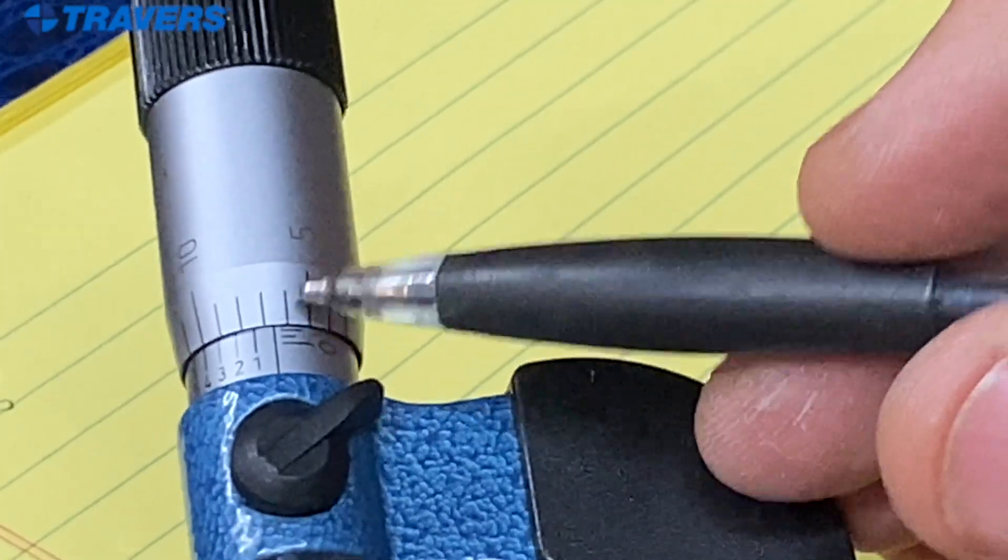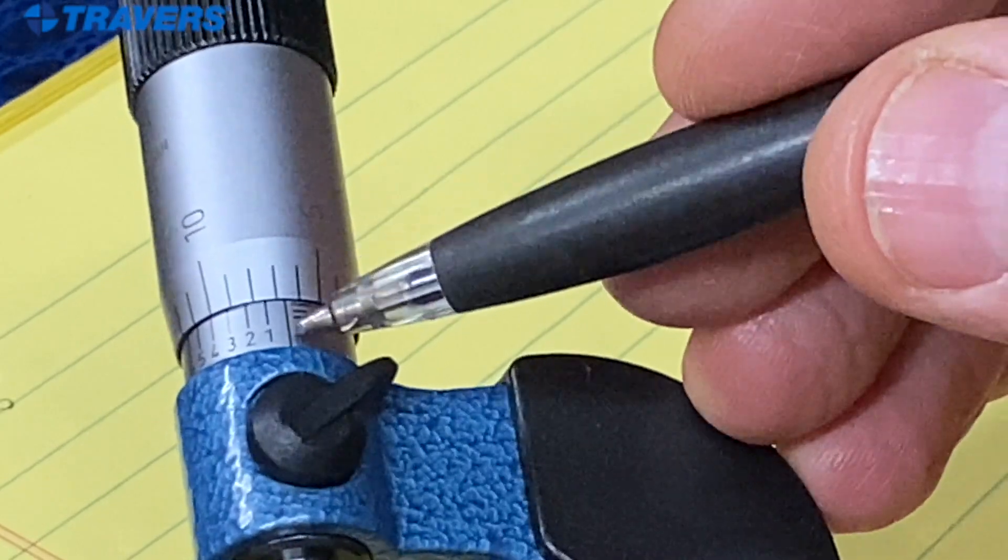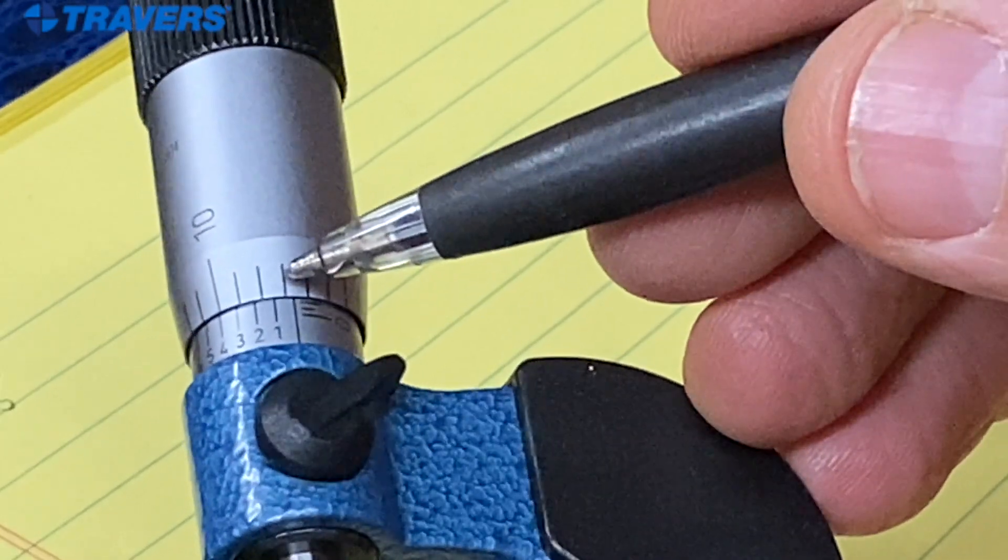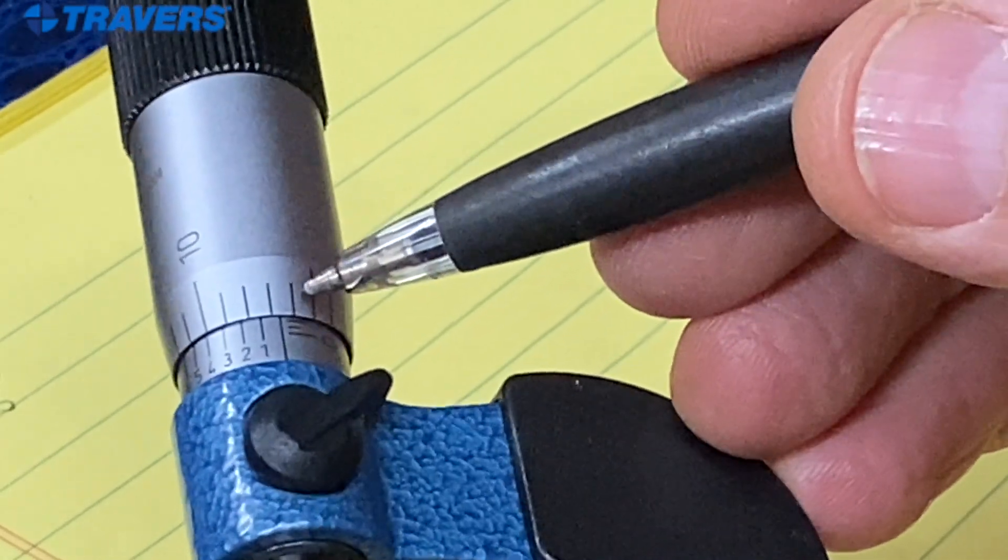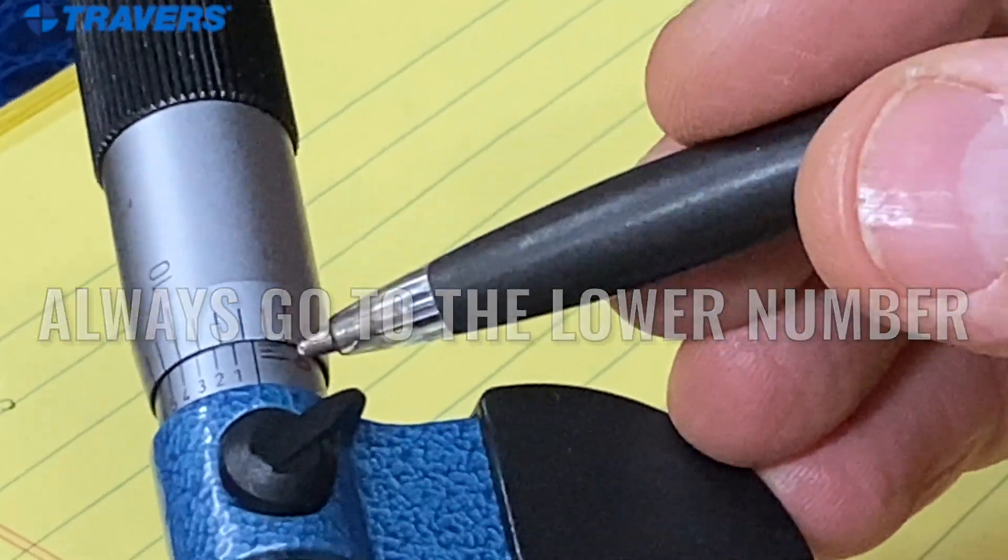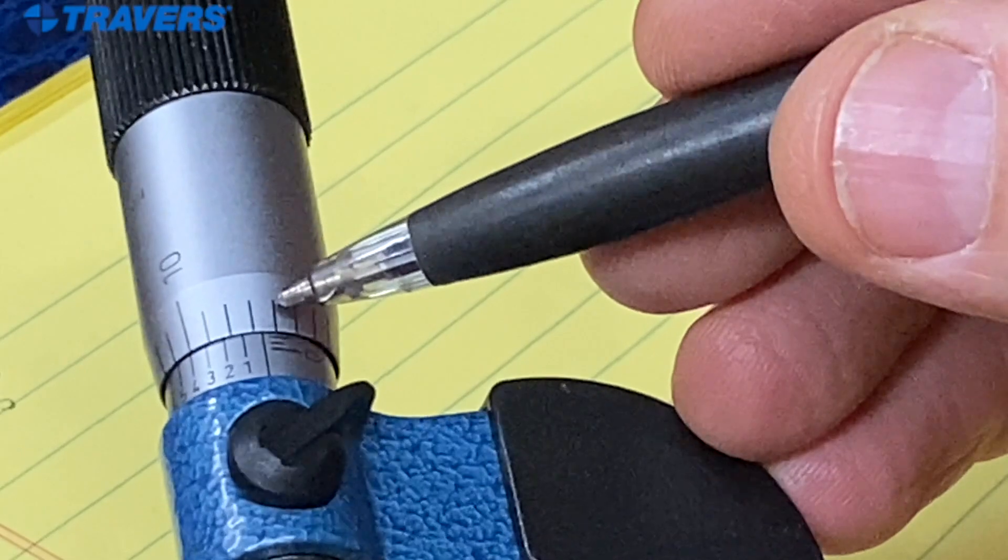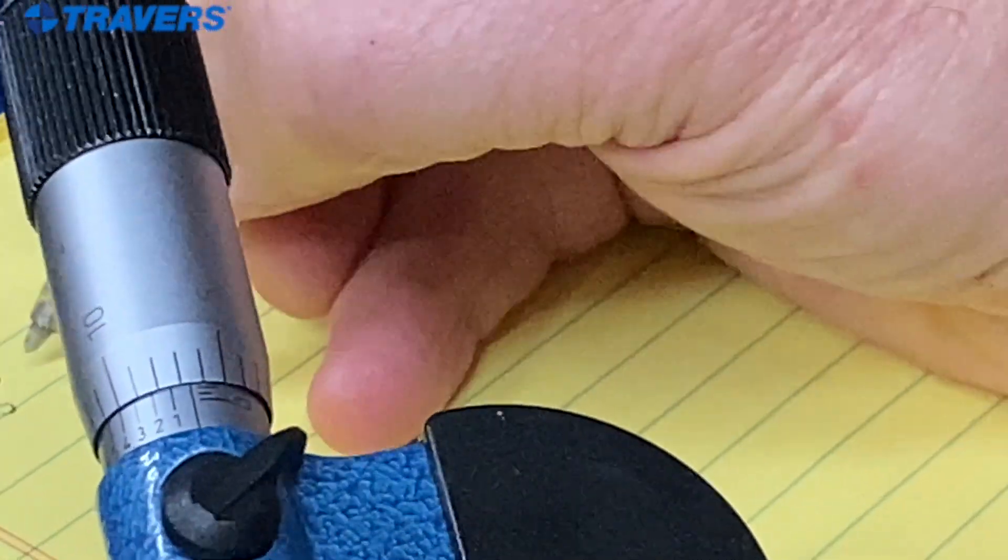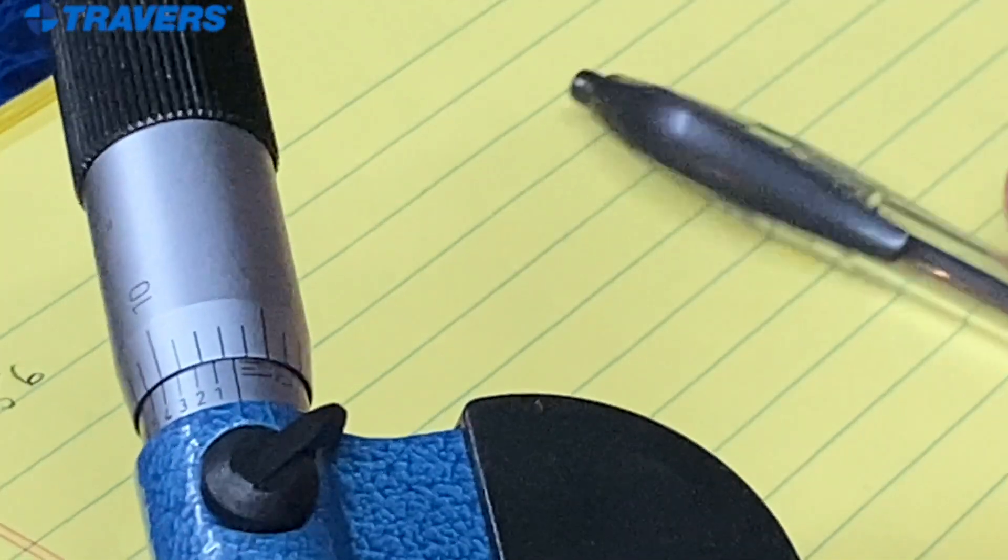Then on the thimble, we have another five and a six. And this gauge line is between the six and the seven. So you always go to the lower number, never, never, ever, ever to the higher number. So this is 0.056. And I'll write that down.